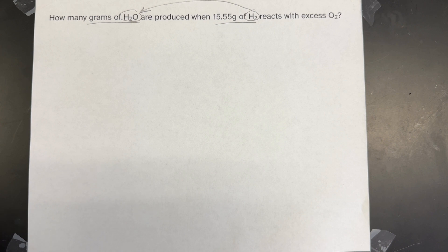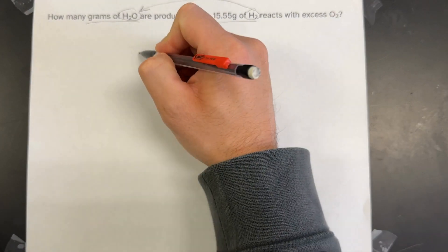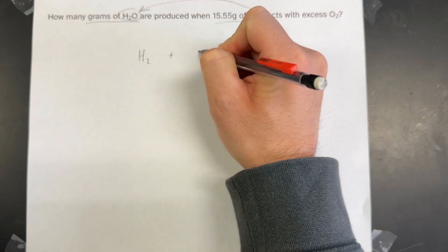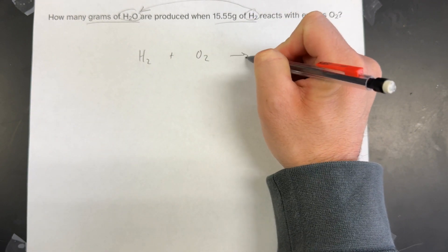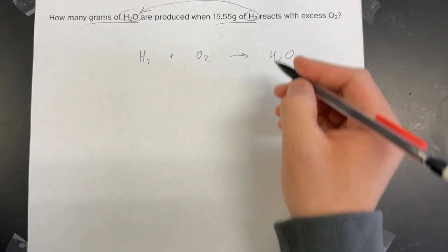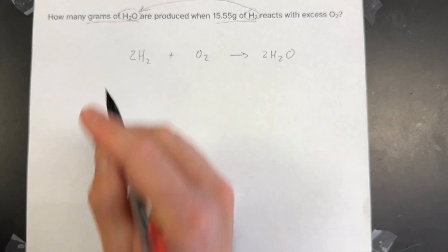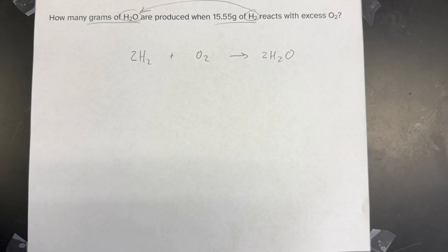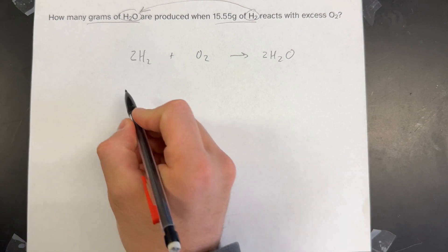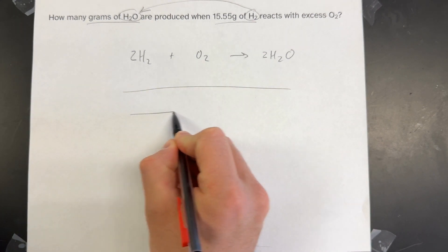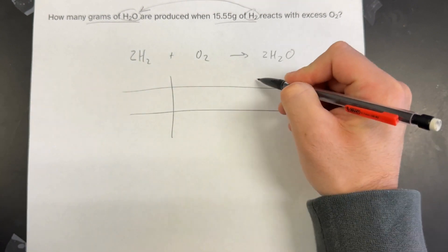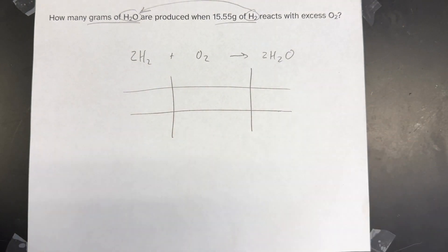Using the problem, I'll write the balanced chemical reaction. It tells me that H2 is reacting with O2 to create H2O. Now that I have a balanced chemical reaction, the next step is to draw a BCA table. We're going to draw a table with a section or box under each reactant and each product.